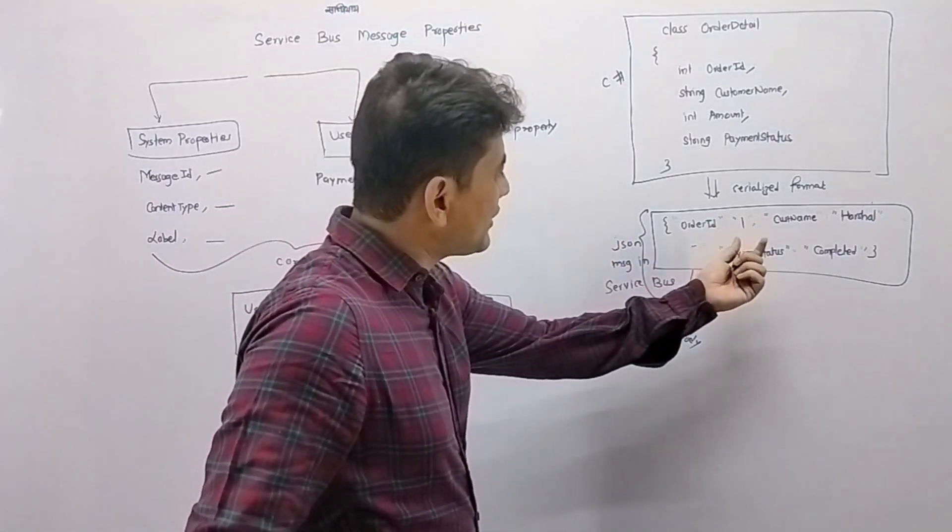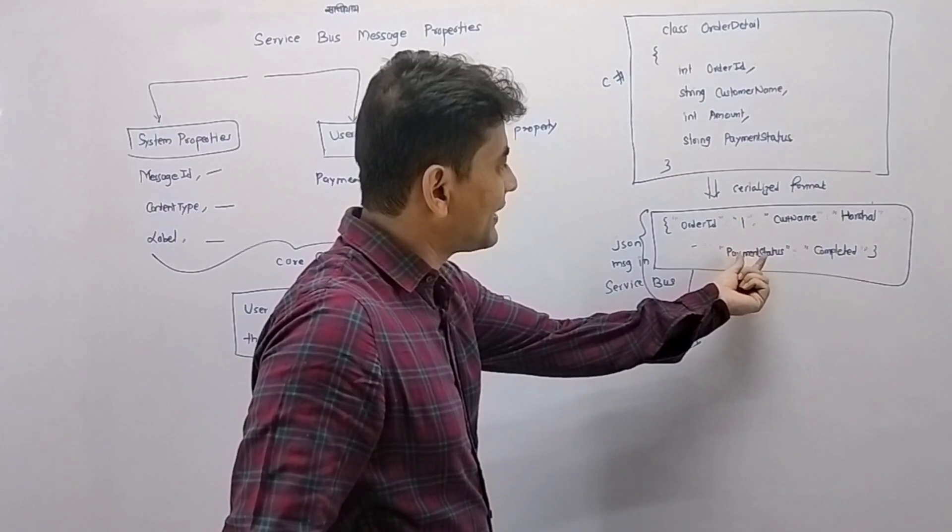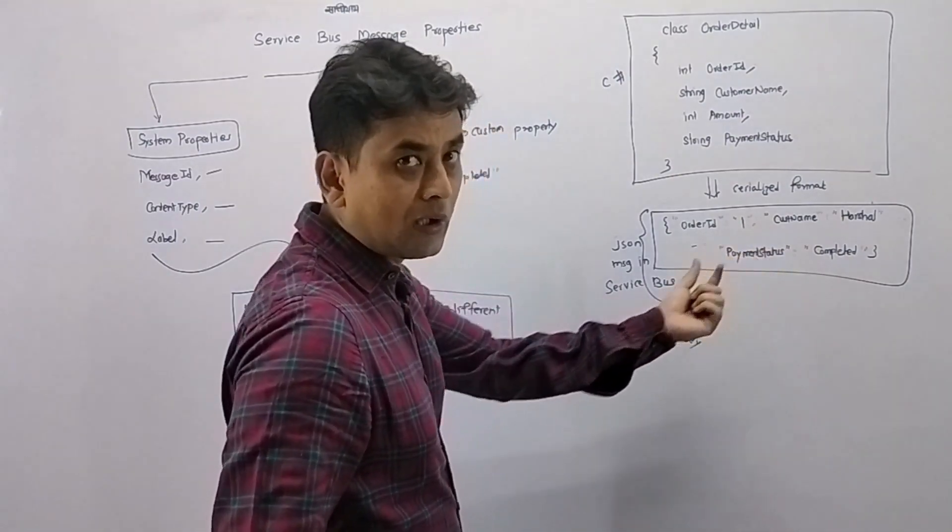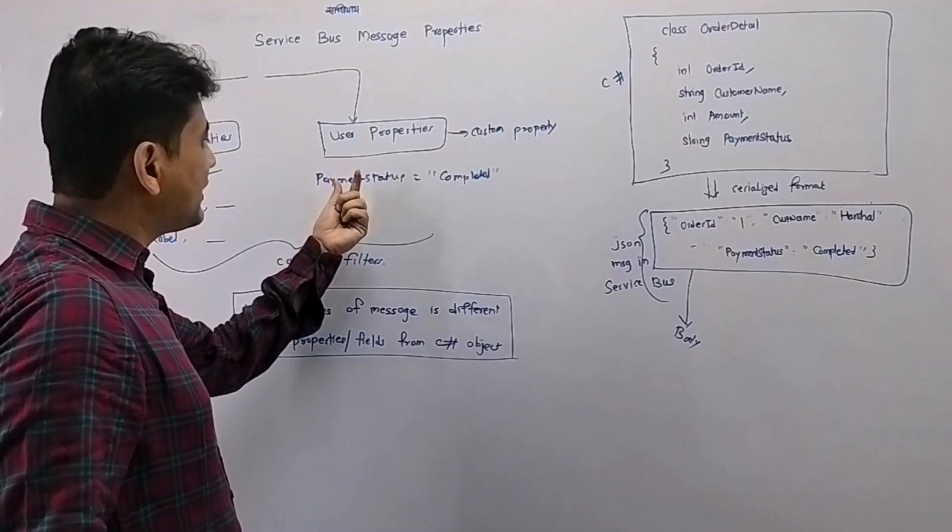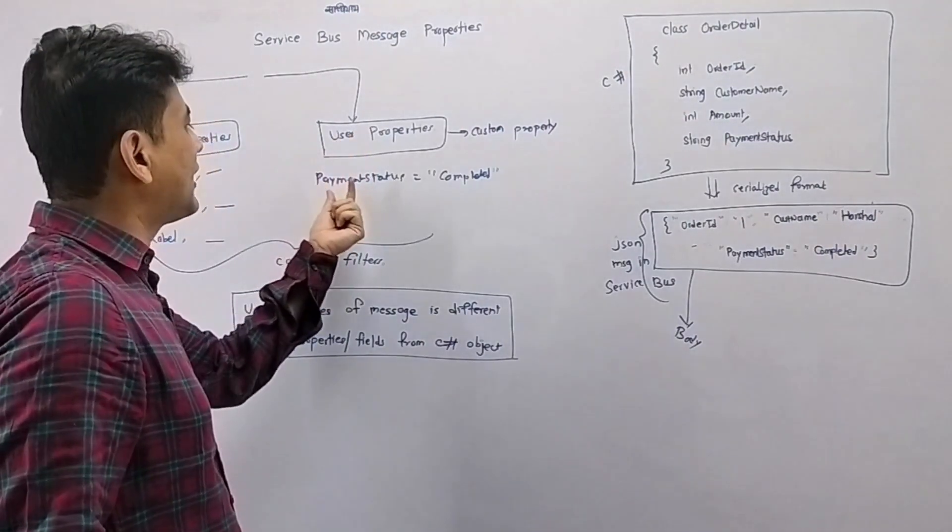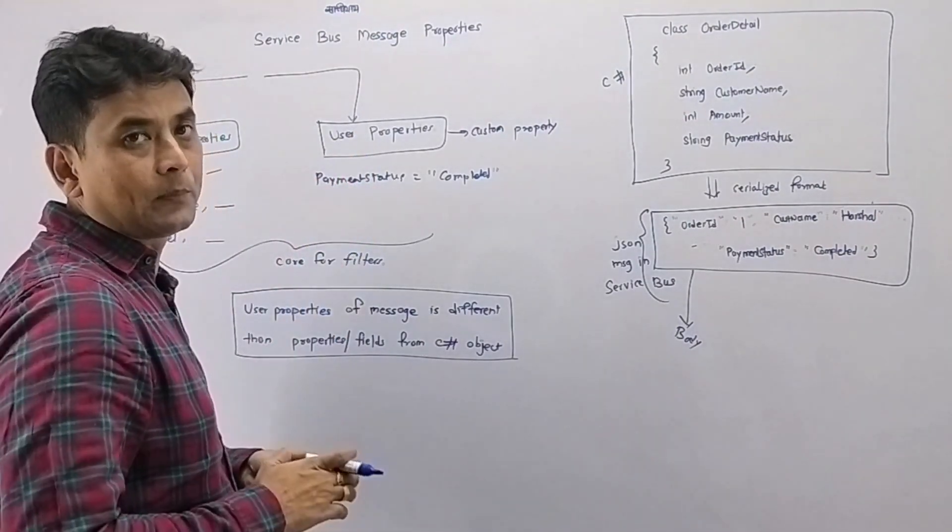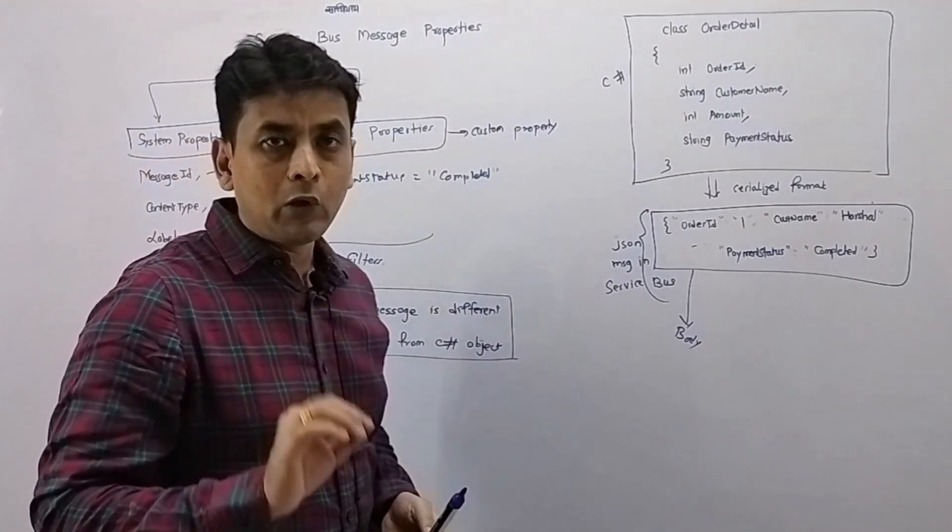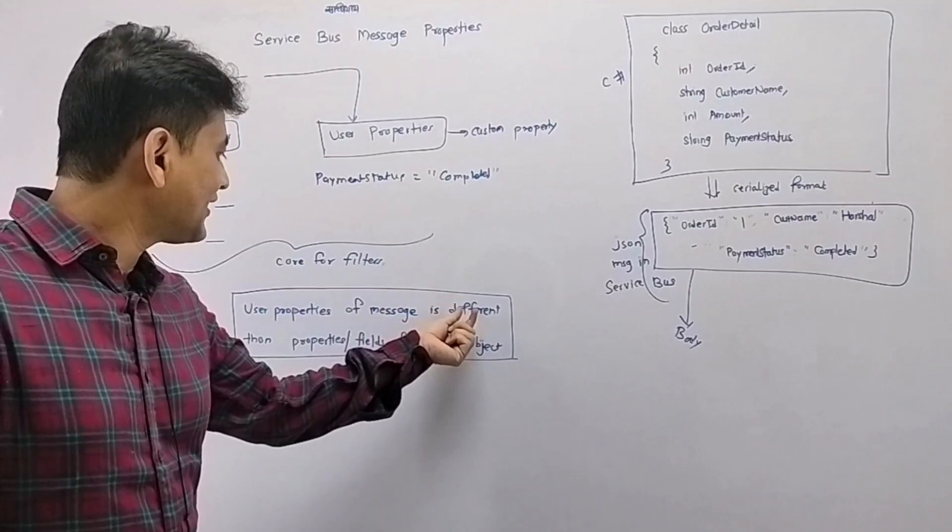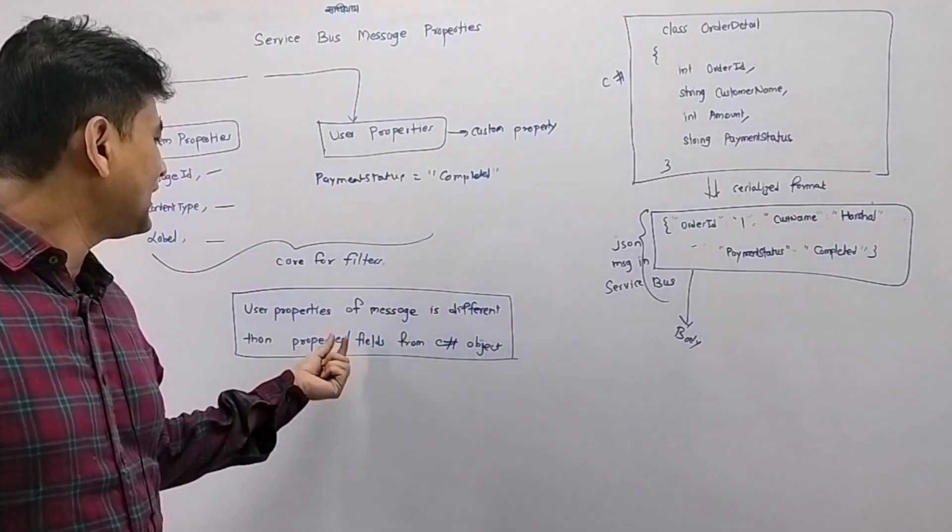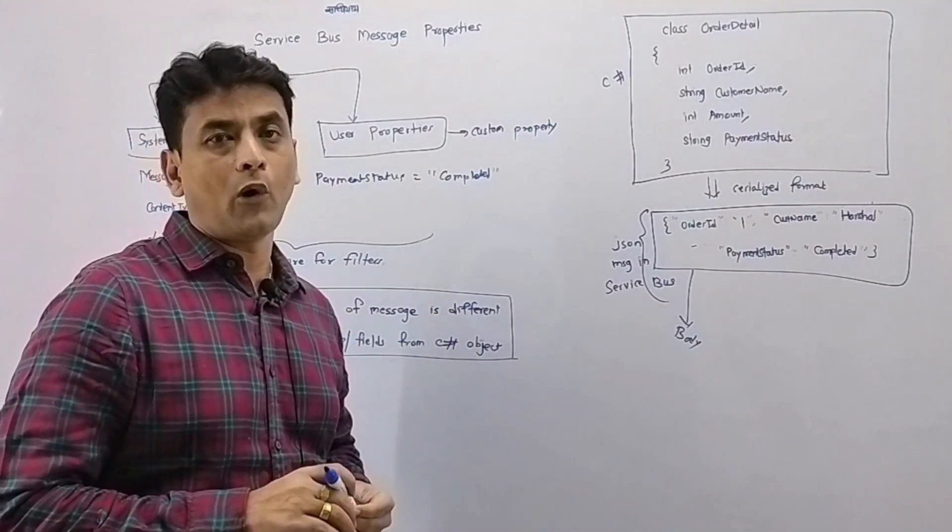So the property which we have in this message body - payment status equals completed - that's different from the property which we have specified as a user-defined property. So as of now, just remember that user properties of a message are different than the properties or fields from a C# object.